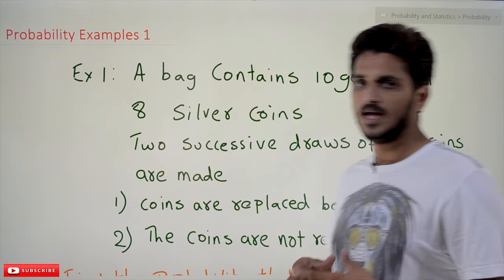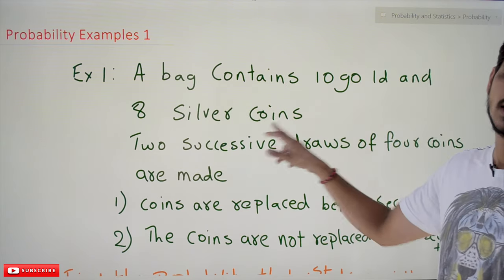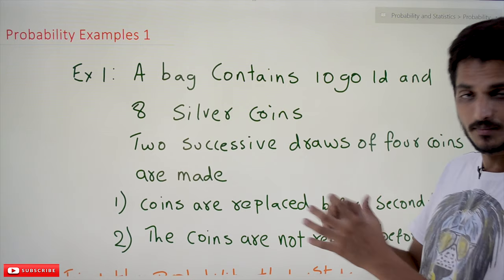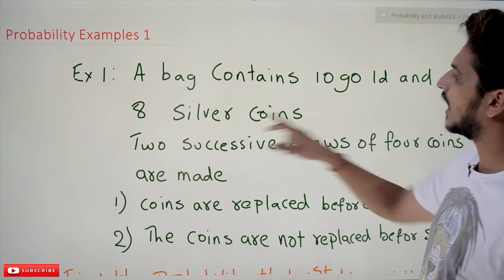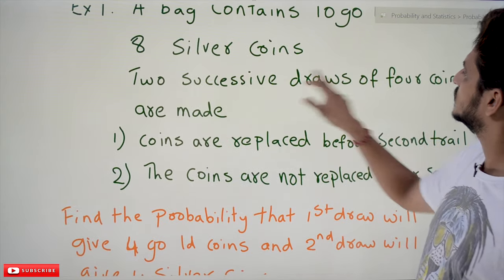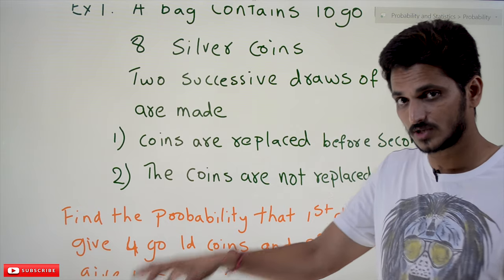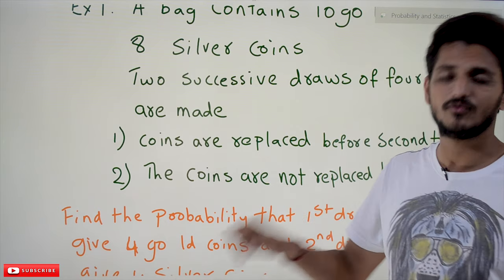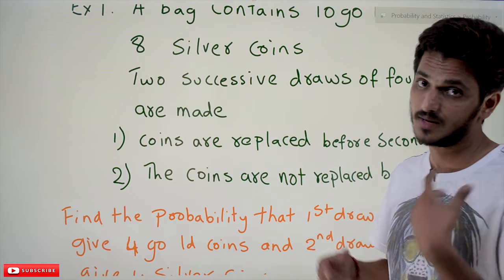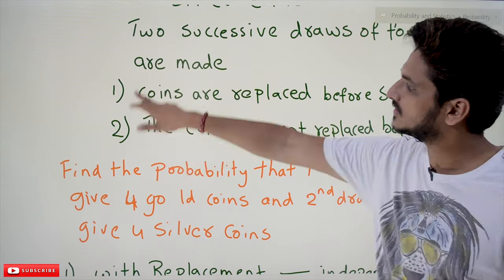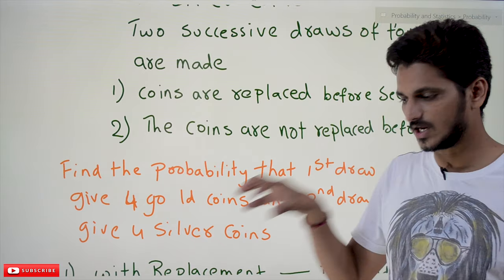Coming to today's class, let's try to do the examples. A bag contains 10 gold and 8 silver coins. Two successive draws of four coins are made — first time we are going to select four coins, second time we are going to select four coins. Two successive attempts are made; that is what a random experiment is.